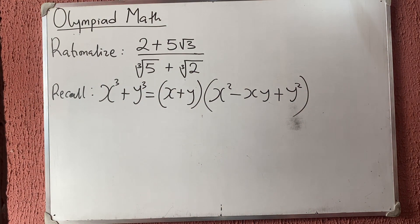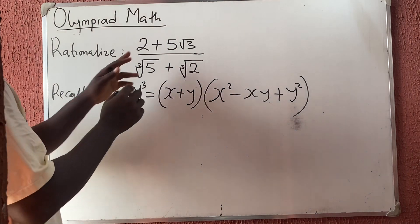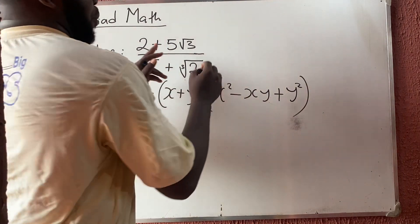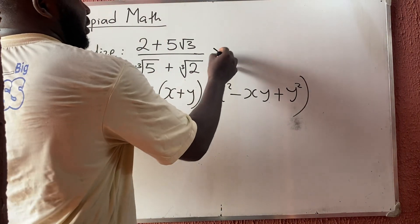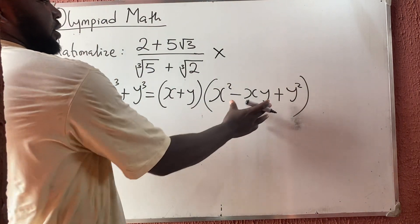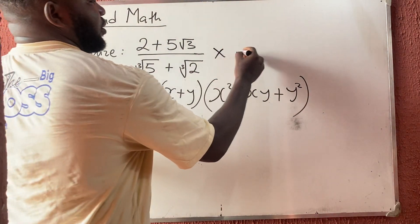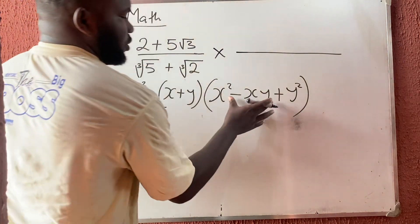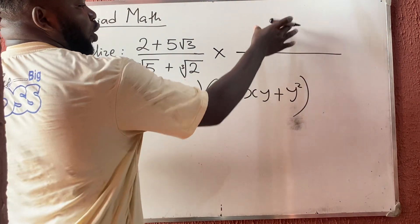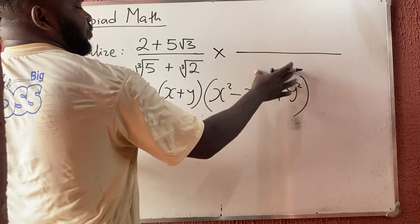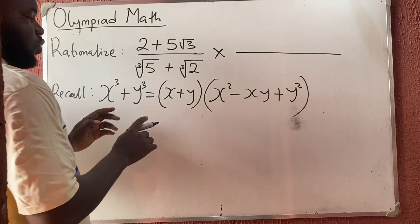Once you know this identity, you are done. What I am going to use to multiply up and down is simply something that looks like the second factor of that identity. So let me show you what I am going to put up and down here.